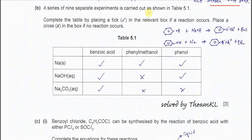Nine separate experiments are carried out as shown in Table 5.1. Complete the table by placing a tick in the relevant box if a reaction occurred, place a cross if no reaction occurred. So let's start with benzoic acid. Benzoic acid is a stronger acid than the two compounds, so therefore it can react with all these reagents. It can react with sodium to form hydrogen gas, it can react with sodium hydroxide to form salt and water - it's a neutralization. And it can react with sodium carbonate to form CO2. So therefore put a tick for all these.